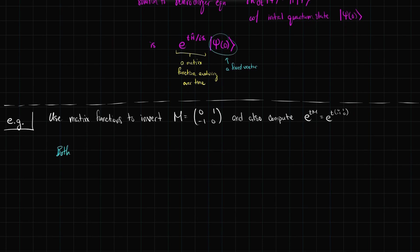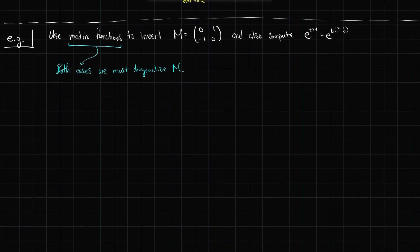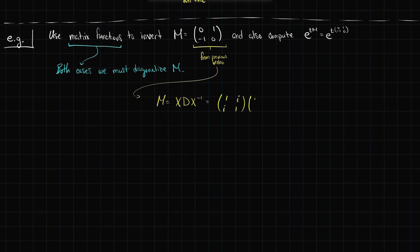In both cases, any time we use matrix functions, we must diagonalize M, which means we have to find its eigenvectors and eigenvalues. We're going back — this is the matrix from the previous video. Recall that the diagonalization here, X D X⁻¹, looked like X = [[1,i],[i,1]], eigenvalues i and -i, and X⁻¹ = (1/2)[[1,-i],[-i,1]].